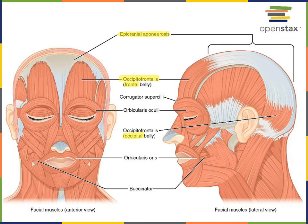The term aponeurosis means a broad tendon, and epicranial refers to its location on the superior surface of the cranium. When the occipitofrontalis contracts, the action of this muscle is to furrow the eyebrow — to wrinkle the skin in the frontal region on the anterior of the cranium.